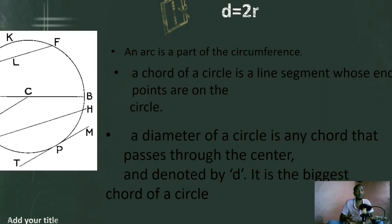And you have arc A, D — A, D, D is an arc of the circle. And the other one, F, B, H — it's also an arc of the circle.